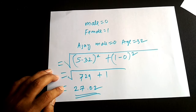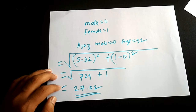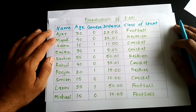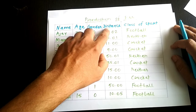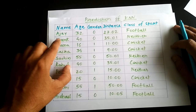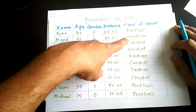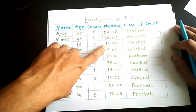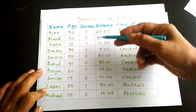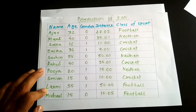We calculate distances between Angelina and all the other people in the reference data in the same way. The resulting distance table shows: Angelina to Ajay is 27.02, to Mark (age 40, male, likes neither) is 35.01, to Sara is 11, to Zaira is 9, and so on.